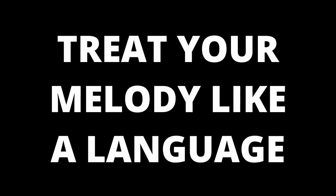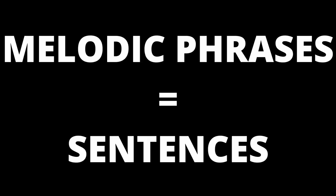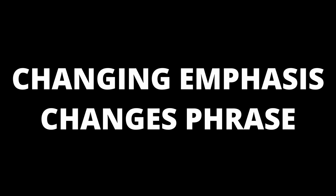Another important thing language allows is the ability for the speaker to breathe. You can also treat your melodies like a language. Think of melodic phrases as sentences — they work as a single unit, conveying a particular melodic idea. You can compare the phrase to a spoken sentence, with a rising and falling inflection of the voice. Where you place the emphasis can change the meaning or feeling of the phrase.